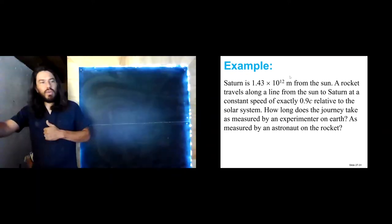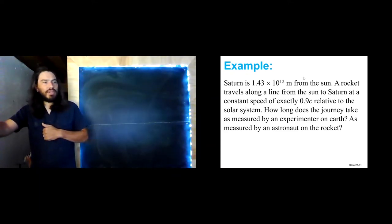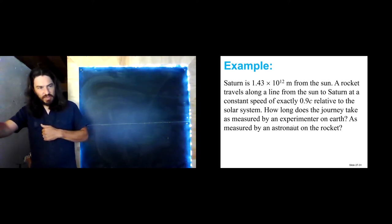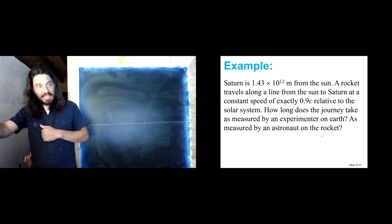Let's do a quick example. Saturn is 1.43×10¹² meters from the sun. A rocket travels from the sun to Saturn at a constant velocity of exactly 0.9C relative to the solar system. How long does the journey take as measured by an experimenter on Earth, and as measured by an experimenter on the rocket?